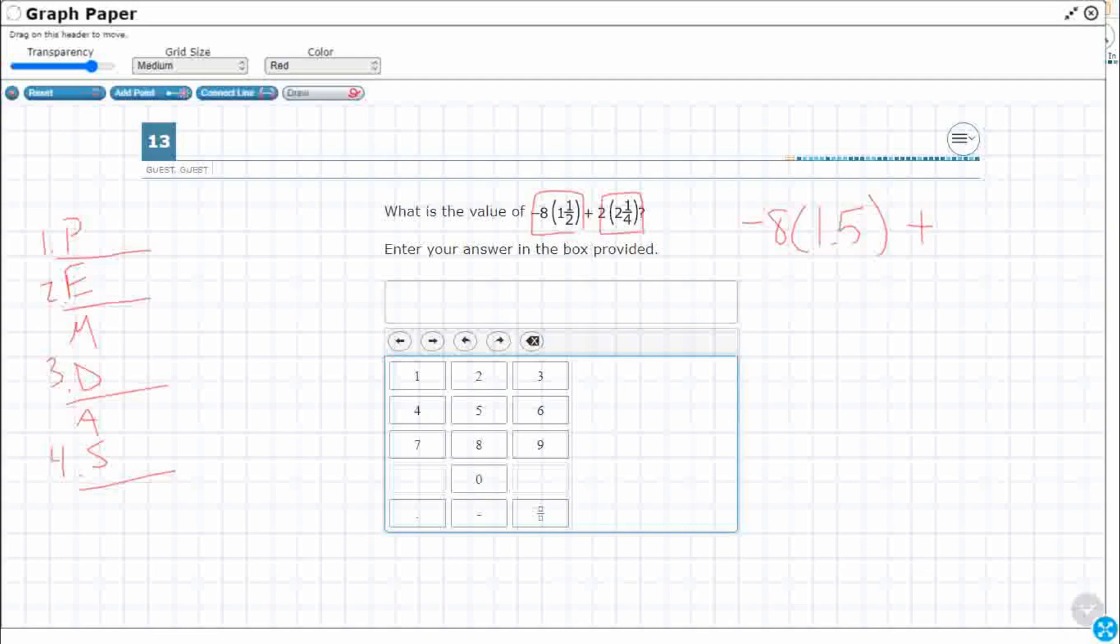And then I'm going to kind of do the same thing over here, plus 2 and 2, and then I need to know 1 fourth is equivalent to 0.25. So now I'm just in decimals. So that's going to be a little bit easier.